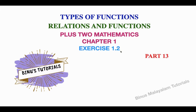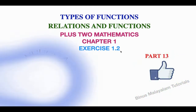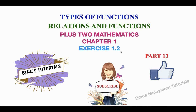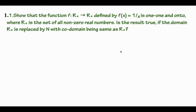Exercise 1.2, problem 1. Example 1.1: Show that the function f from R* to R* defined by f(x) = 1/x is one-one and onto, where R* is the set of all non-zero real numbers. Is the result true if the domain R* is replaced by N, with the co-domain being the same as R*?